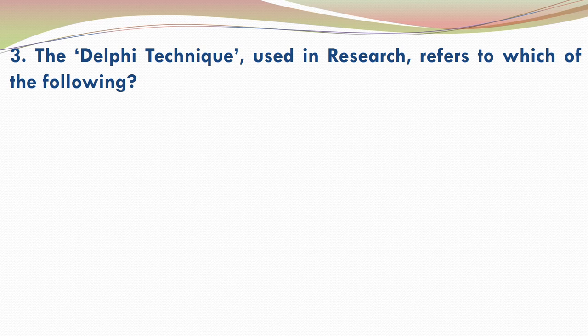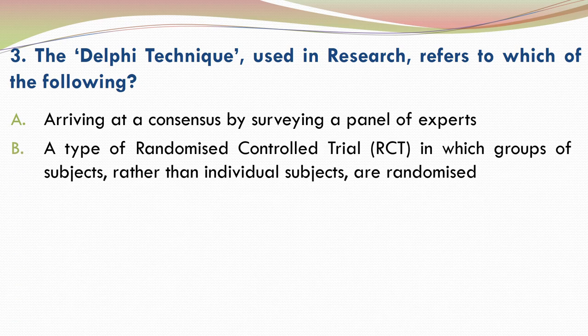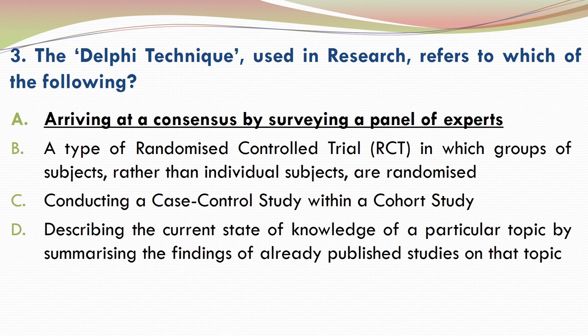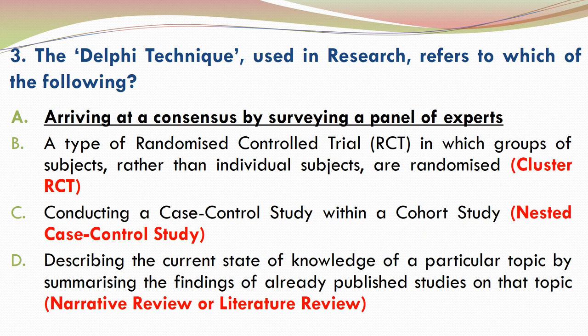Question 3: The Delphi technique used in research refers to which of the following? Please go through the options and make your choice. The correct answer is A — arriving at a consensus by surveying a panel of experts is called the Delphi technique. The other three options are also used in research: B refers to cluster RCT, C is called a nested case-control study, and D is known as a narrative review or literature review. So the correct answer is A.